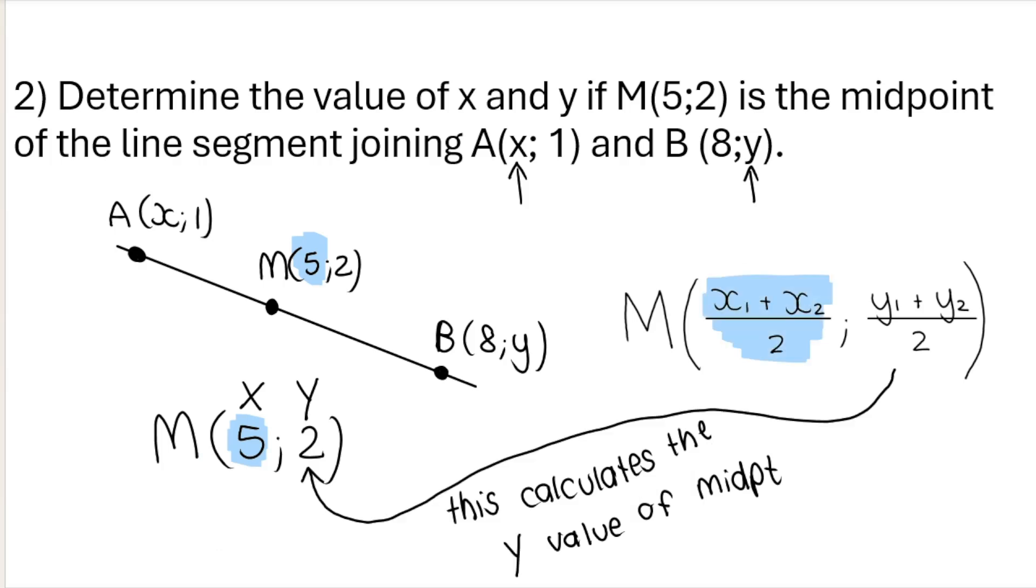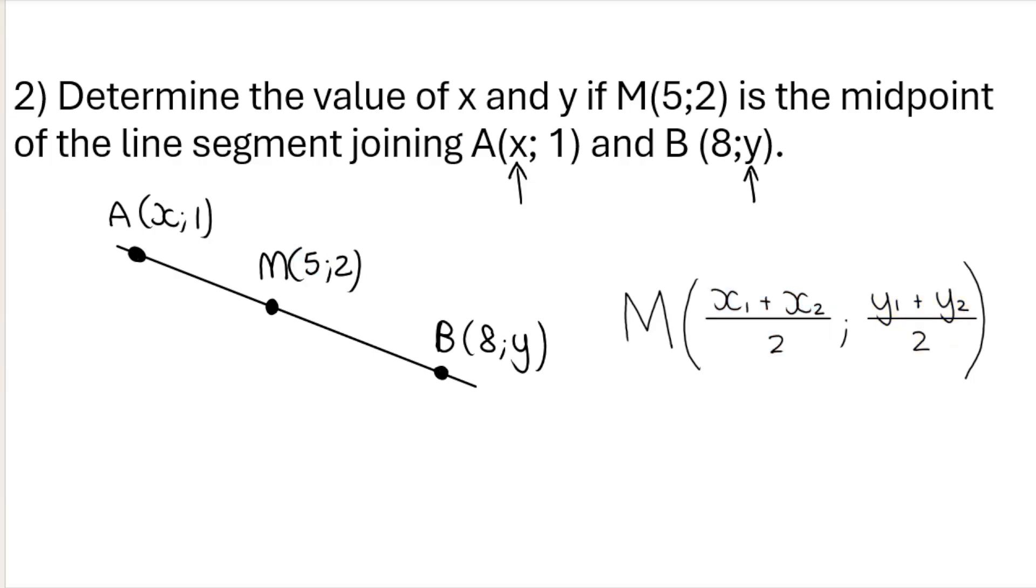And in the same way, this fraction over here calculates the y value of the midpoint. So you sub in values for y1 and y2, you divide it by 2, and the answer is 2. So we need to work backwards to find out what this x is and what this y is. So like I said, we take out this part of the midpoint formula. Remember my midpoint is 5 and 2.